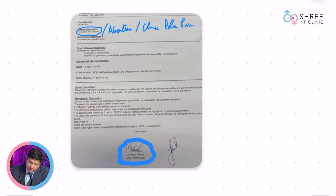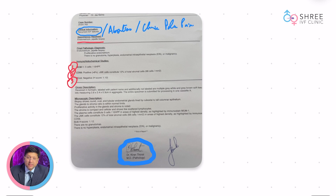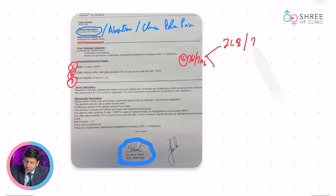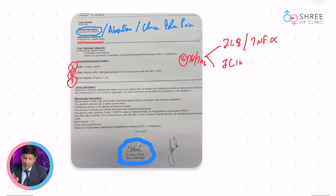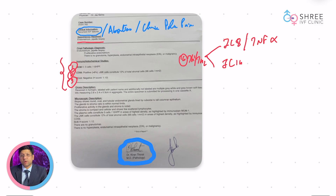Now, how is it done? It is a specimen taken from the endometrium — a pipelle biopsy. These are the three important markers we look at: MUM1, CD56, and BCL6. We also have options for looking at Th1 to Th2 ratios — we may look at interleukin 8, tumor necrosis factor alpha, interleukin 14, and multiple other probes available for selected situations. For a standard situation, markers one, two, and three are more than enough.